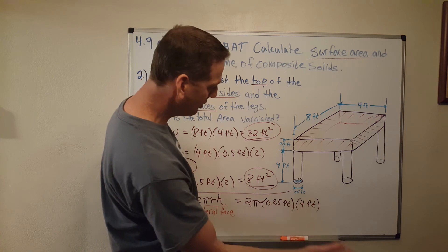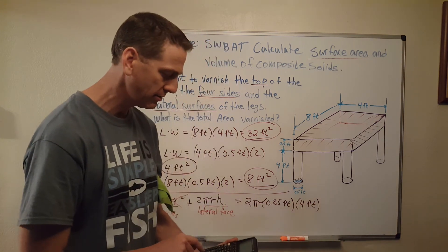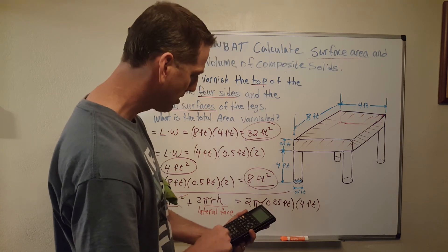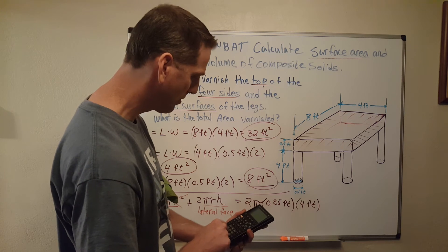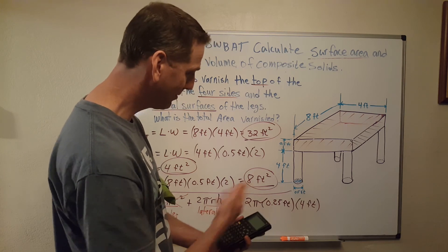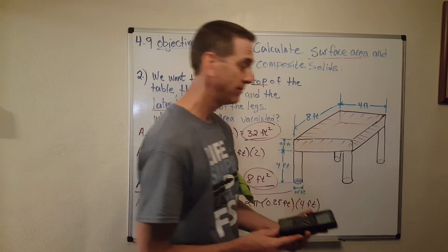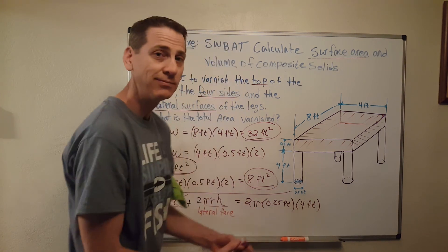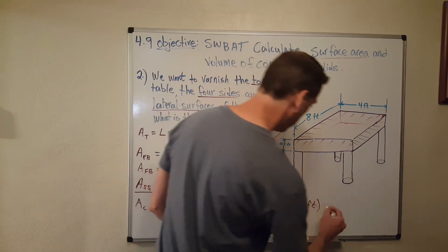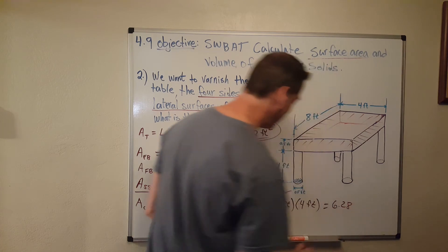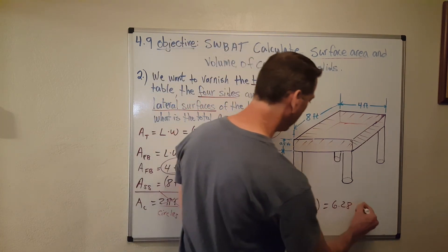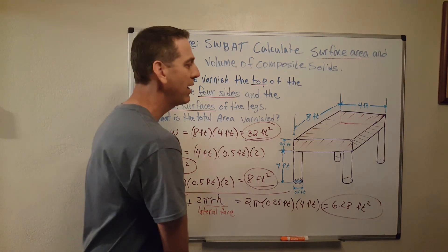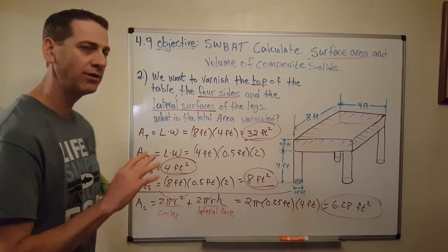So I only need two pi r times height for each leg. The radius r is half the diameter: the diameter is 0.5 feet so the radius is 0.25 feet. The height of the lateral face is four feet. Calculating: two times pi times 0.25 times 4 — since one-quarter of four is one, and one times two pi is 2 times 3.14 — which gives 6.28 square feet.